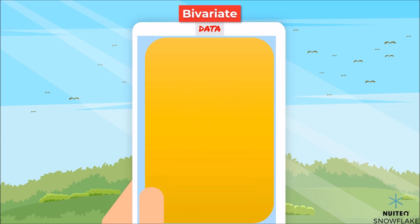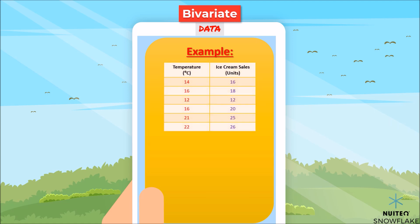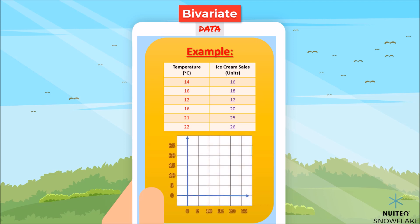Let's check the following example. Here is a set of data relating the temperature on days in August and the number of ice creams sold in a corner shop. In this case, the temperature is the independent variable and ice cream sales is the dependent variable. This means that we plot temperature on the x-axis and ice cream sales on the y-axis. The resulting graph looks like this. Cool, right?